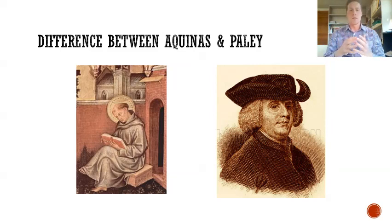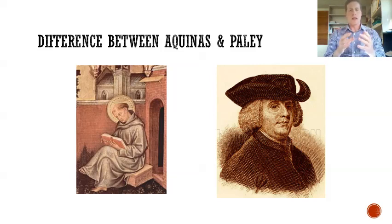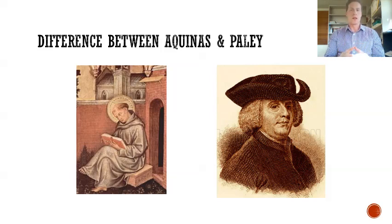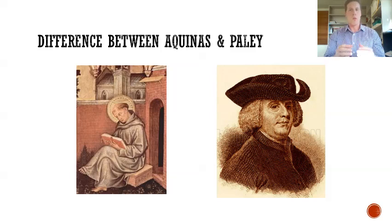Let's have a look at the difference between Aquinas and Paley. Firstly, Aquinas — his argument to design states that objects seem to have a purpose. This purpose points to a designer, and that designer is God. Aquinas uses the regularity of succession, focusing on how one thing follows another according to the laws of nature, leading to particular results of purpose.